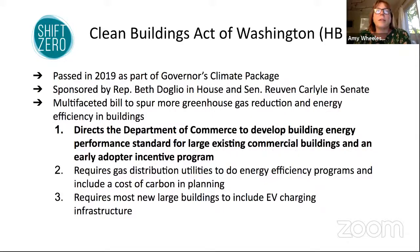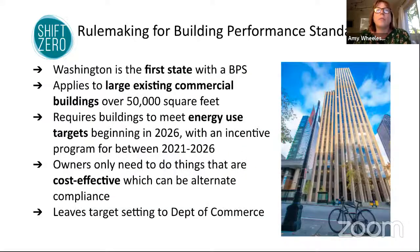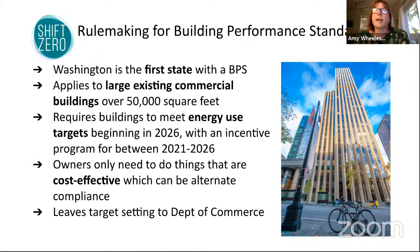I'm going to focus mostly on the performance standards and the rulemaking. This bill passed in 2019. Rulemaking started in late 2019 and is required by statute to finish in November of this year. Washington is the first state in the nation to pass a building performance standard — to actually require mandatory retrofits for existing buildings. New York City, Washington DC, and St. Louis are three cities that have taken this step, but Washington is the first state. I think that's pretty noteworthy.